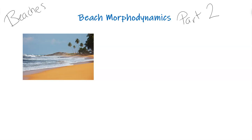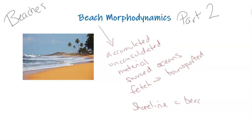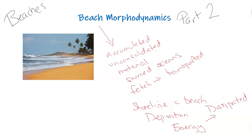As a review from part one, the beach is accumulated unconsolidated material sourced mainly from rivers, coastlines, and the oceans. The more swell and the more fetch, the more material can be transported. Along the shoreline — that long thin strip of interface between the oceans and land — you have deposition of all that material and also the energy, which is dissipated at this location, meaning it is transferred to another form of energy, basically fizzing out.